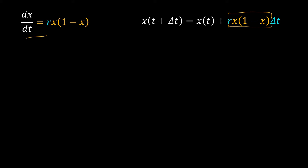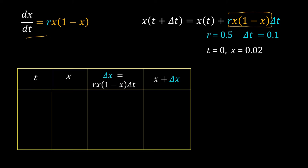To numerically solve this problem, you have to give the numerical value of r and delta_t — the parameter and the time step value. Suppose r is 0.5 and delta_t is 0.1. You also have to specify the initial condition: at t = 0, x = 0.02. Now create a table. The first column is time, the second column is the dependent variable x, the third column is delta_x which equals the ODE function r·x·(1 - x)·delta_t, and the last column is x + delta_x.